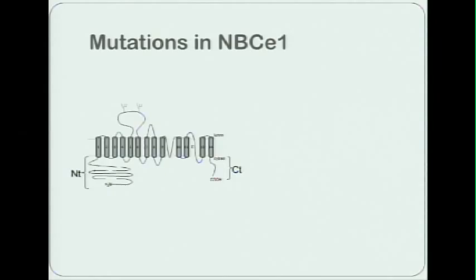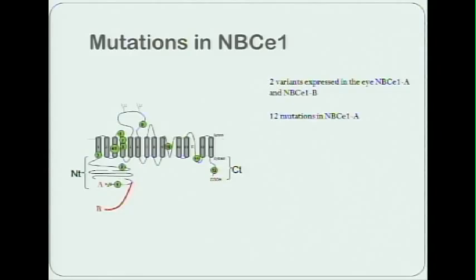Let's take a look at these mutations. This is the NBCe1 molecule represented as a polypeptide string that's threaded through the membrane multiple times. What we need to know is that there are two variants of NBCe1 expressed from the same gene that are expressed in the eye. There's the A variant with a short N-terminus that's in the kidney as well, and there's a B variant that has a longer N-terminus. That becomes relevant when we look at the 12 mutations that have been described in NBCe1.